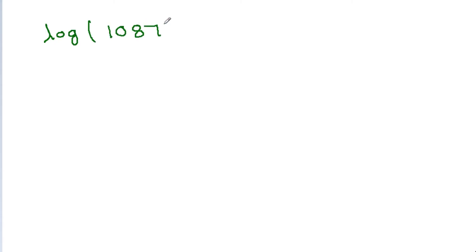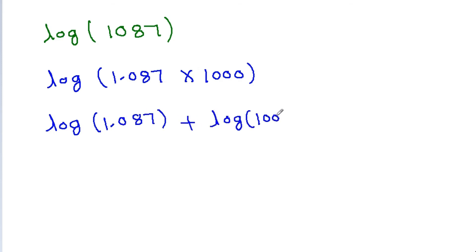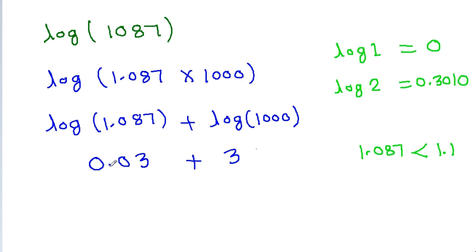If we have to find the value of log 1087, we write it as log 1.087 plus log 1000. Log 1000 is 3. For log 1.087, we know log 1 is 0 and log 2 is 0.3010. Since 1.087 is less than 1.1, log 1.1 is approximately 0.03. So log 1087 ≈ 3.03.